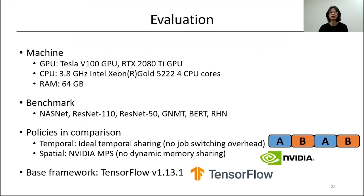Now let's see the evaluation. We use two GPU machines and six benchmarks. There are two comparison baselines: one is ideal temporal sharing with no job-switching overhead, and the other is NVIDIA MPS, which is a representative spatial sharing approach with no dynamic memory sharing technique. For implementation, we adopt TensorFlow as our base framework.